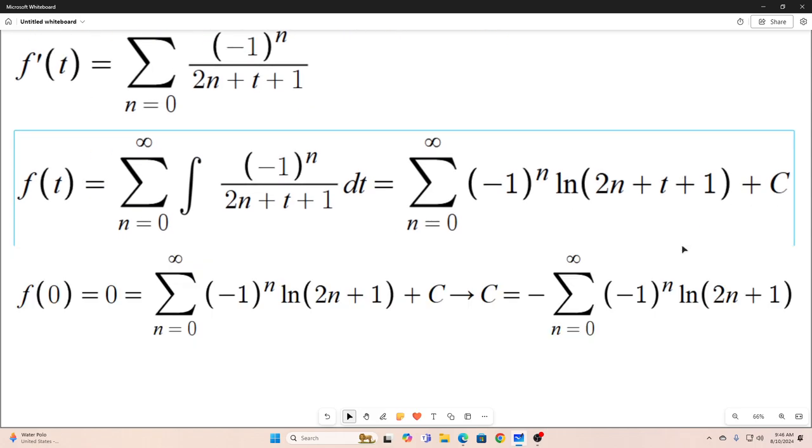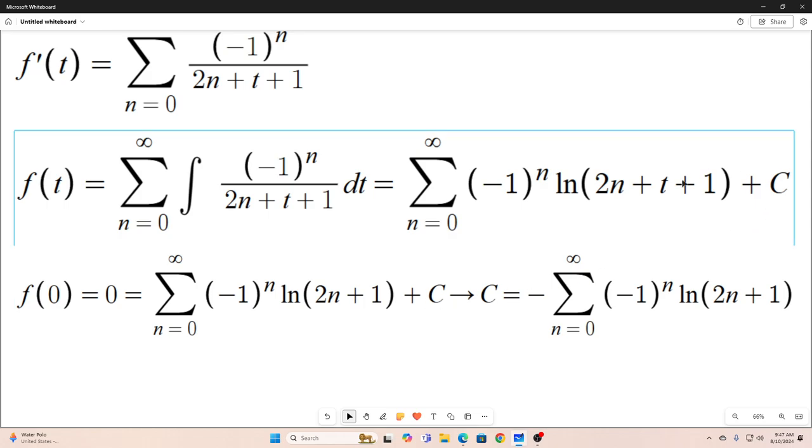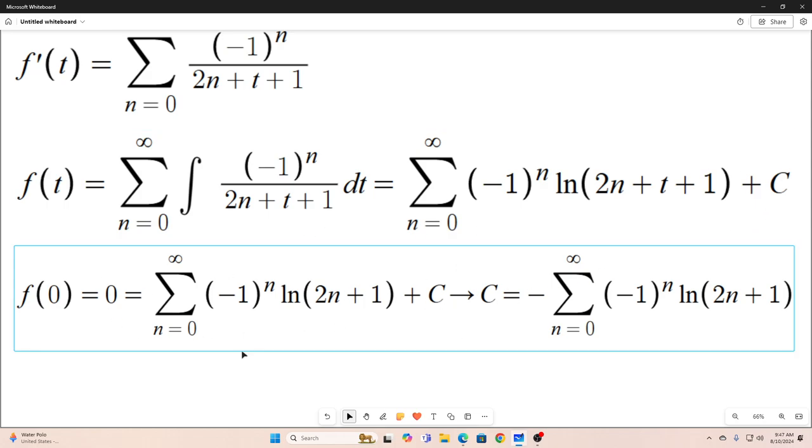All right. So, now we're going to use this, if you remember from before, that if we evaluate our function at the point t is equal to 0, we get 0. So if we evaluate this thing at 0, which is right here, basically that t just drops out, we get 0. So 0 is equal to this, which implies that c is equal to the negative of this. So we have c is equal to the negative of this sum right here.